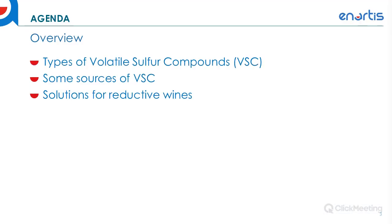The general overview: we're going to talk about the different types of volatile sulfur compounds or VSCs, some of the sources of those volatile sulfur compounds in wine, and then some of the solutions we have for reductive wines.